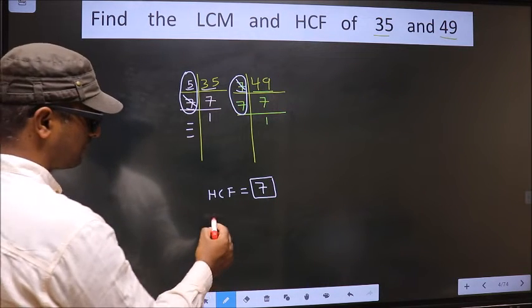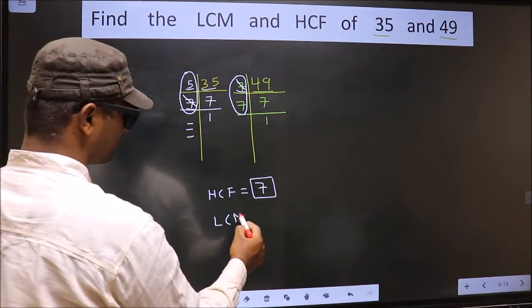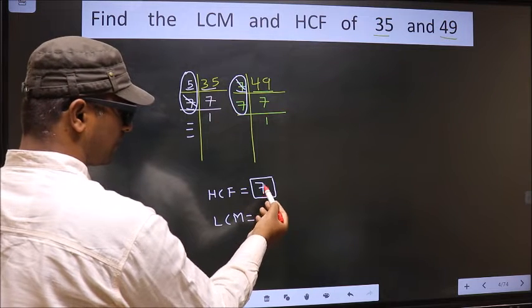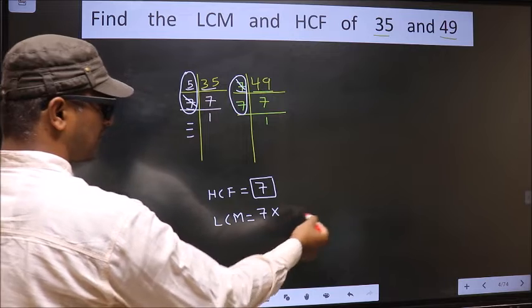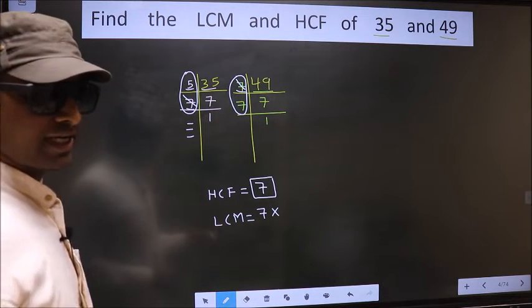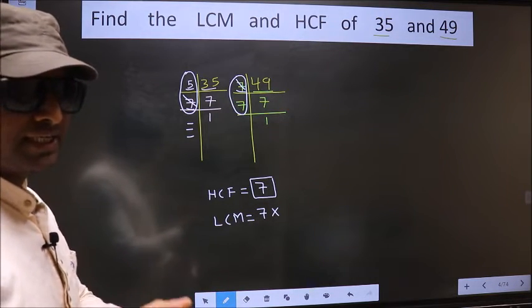Now to get LCM. Whatever HCF we got, to that we should multiply by the numbers which we did not cut.